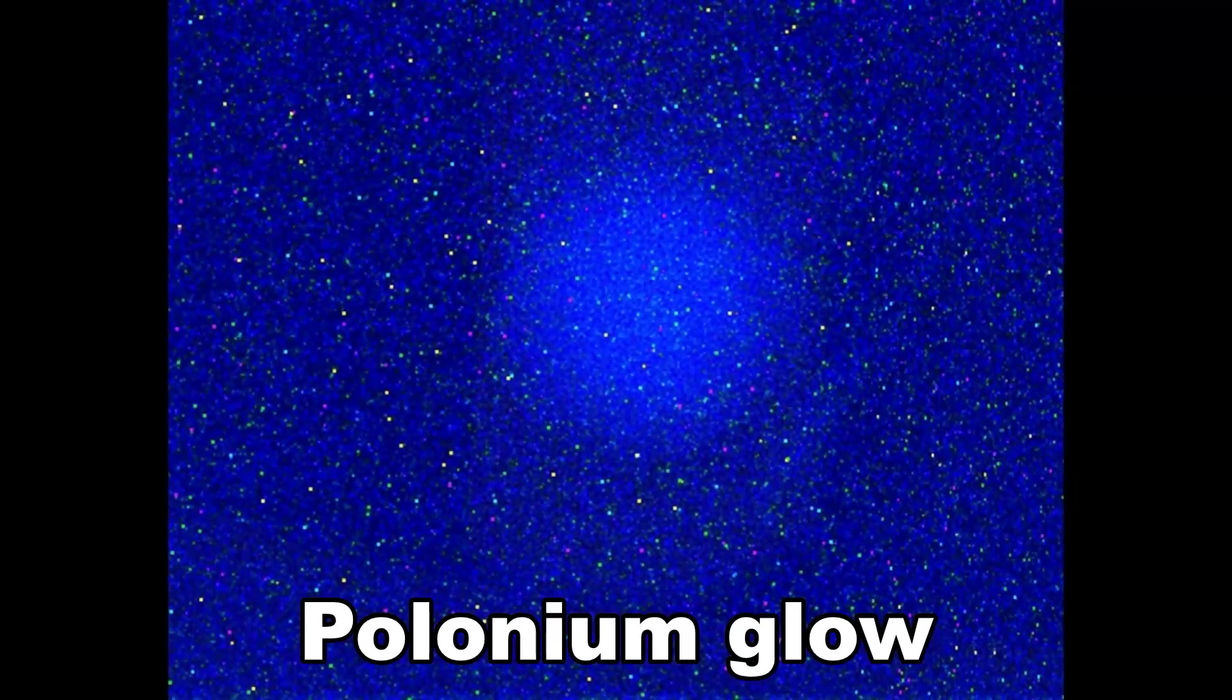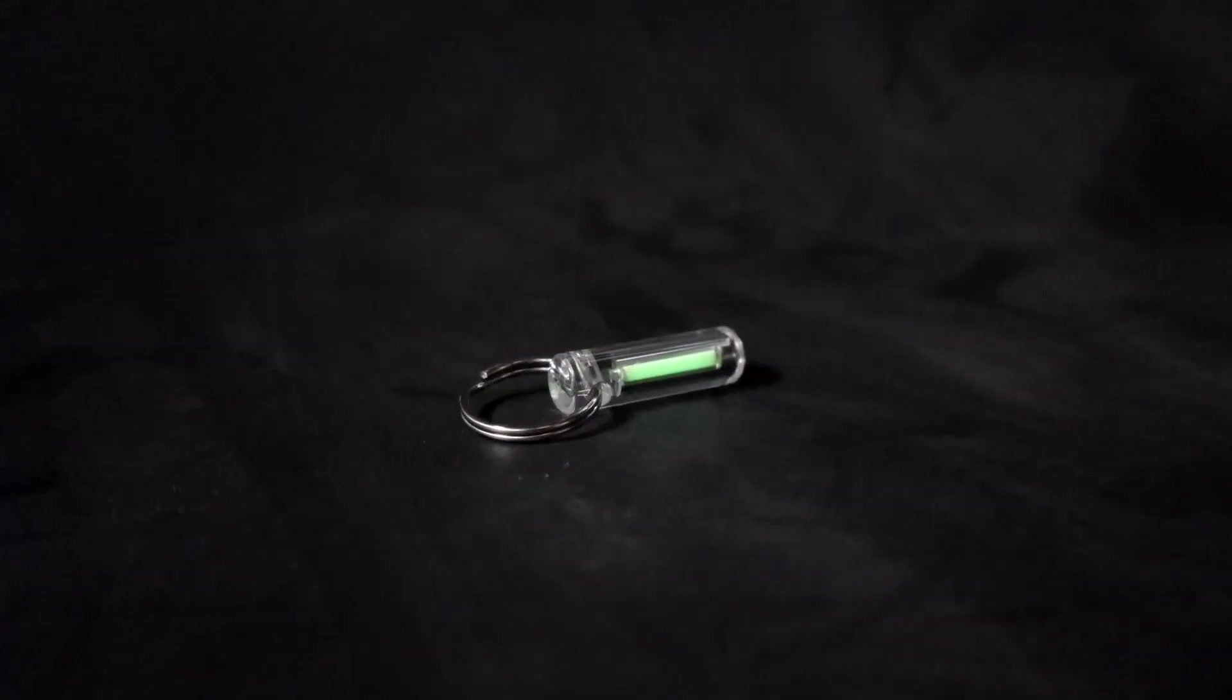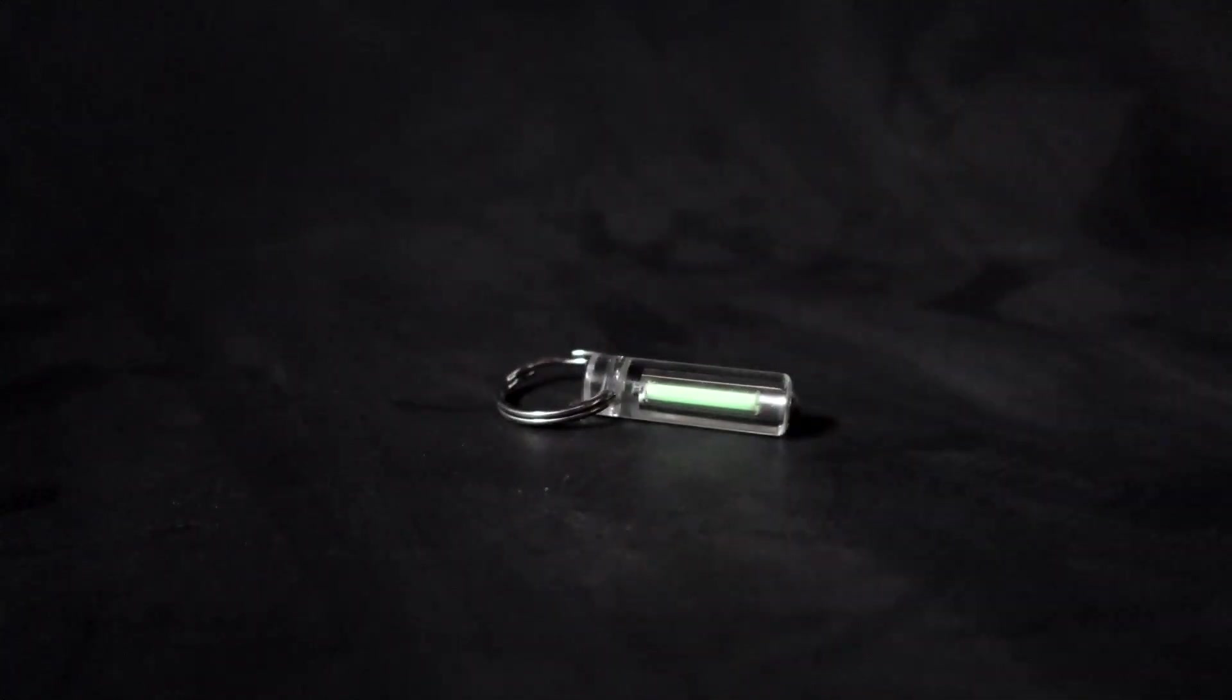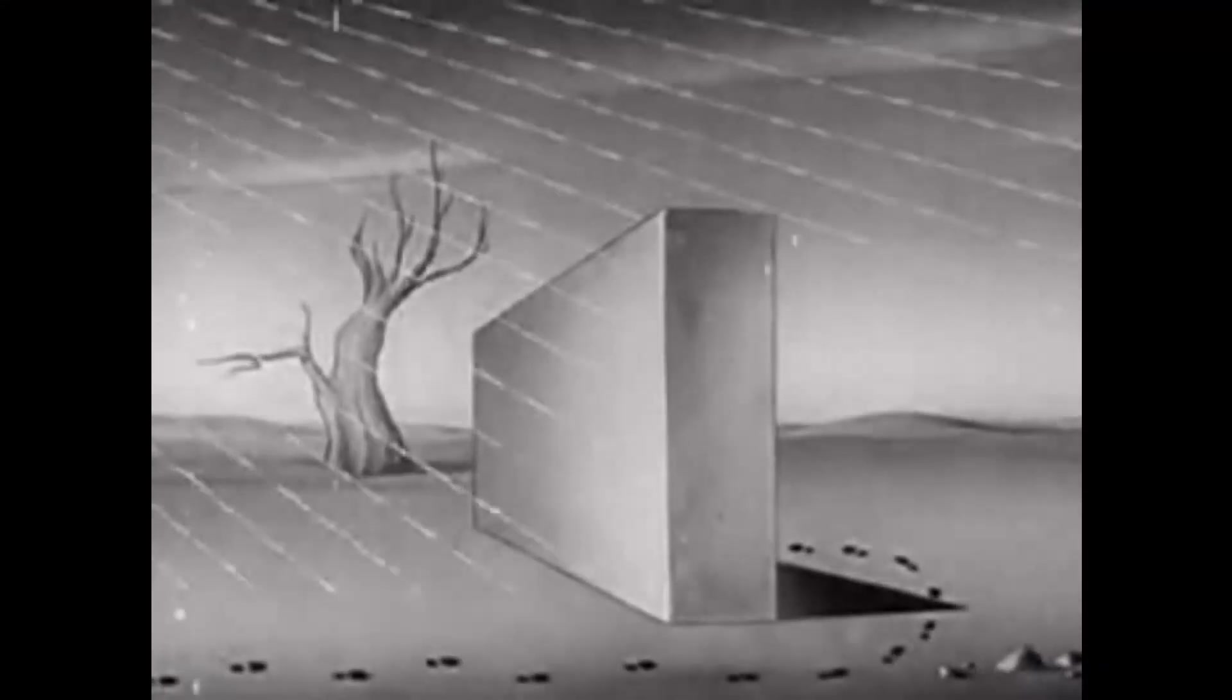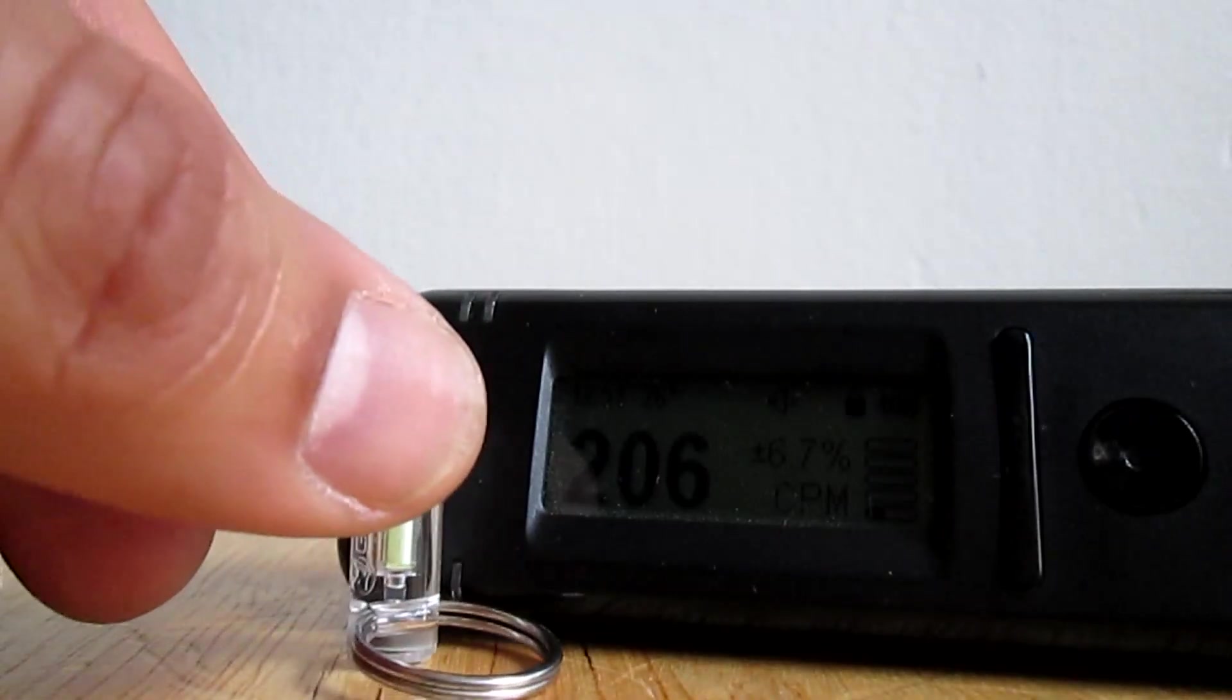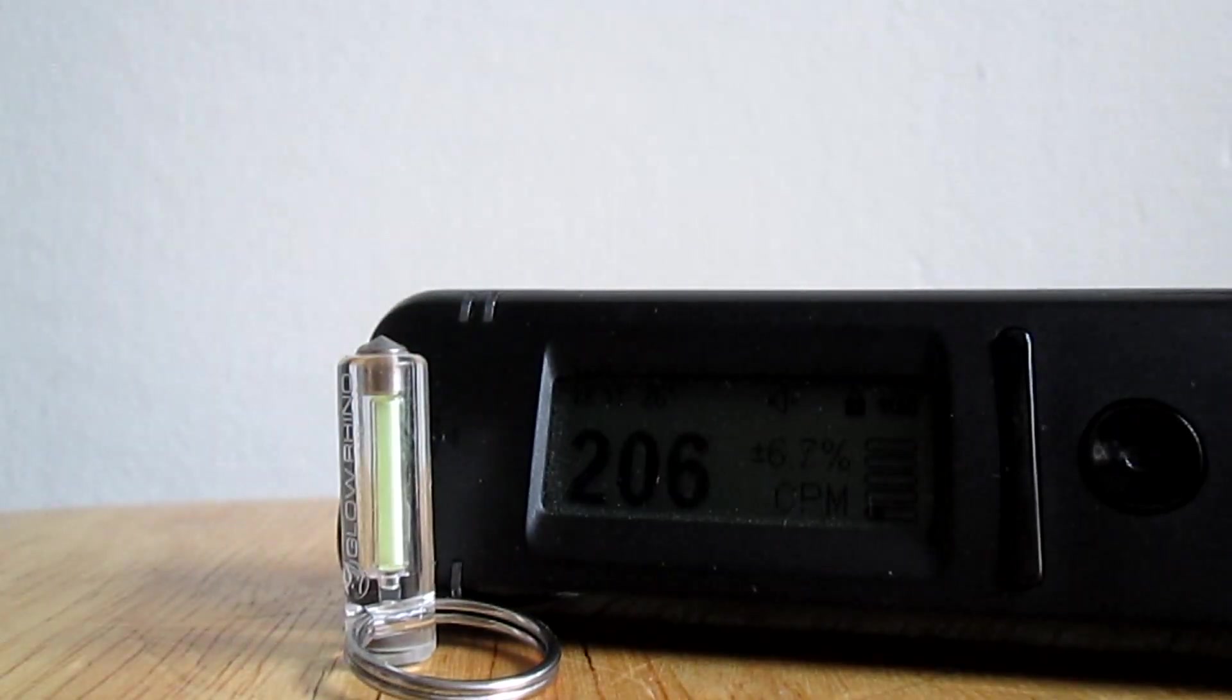The total dose accumulated from carrying this keychain all year is minuscule and should not concern anyone. The energy dissipated can be radiated in X-rays by bremsstrahlung or braking radiation. This is not easily detected and this Geiger counter does not see anything.